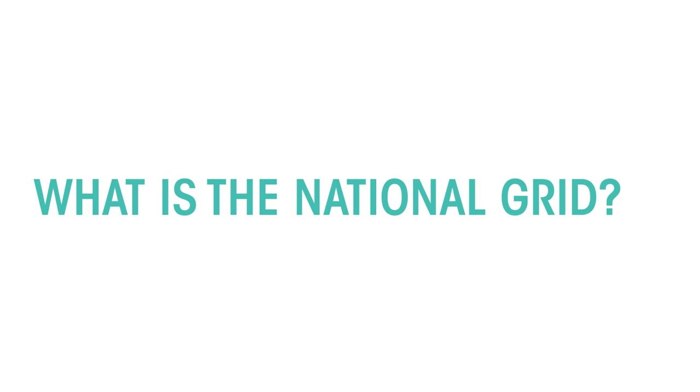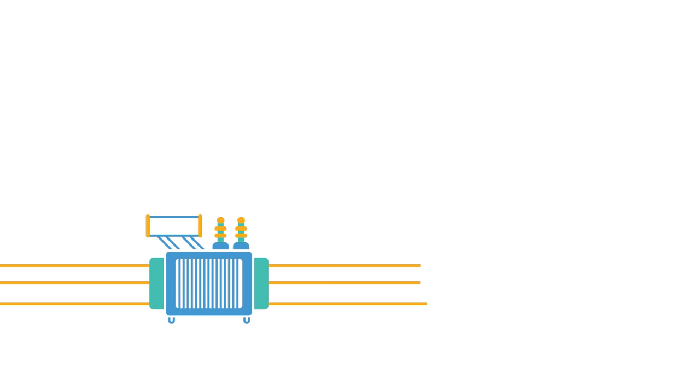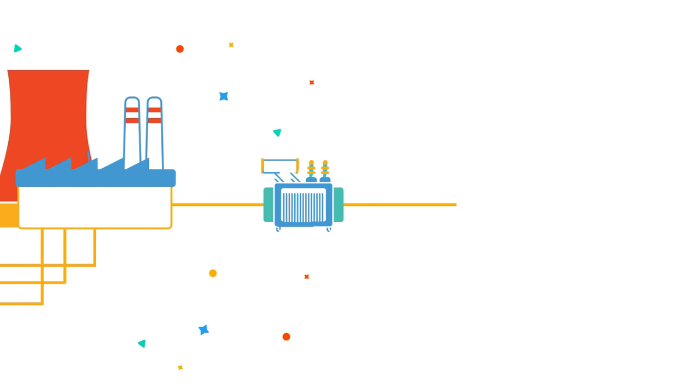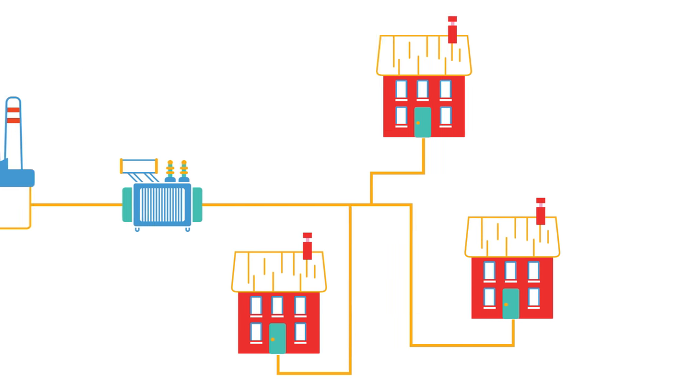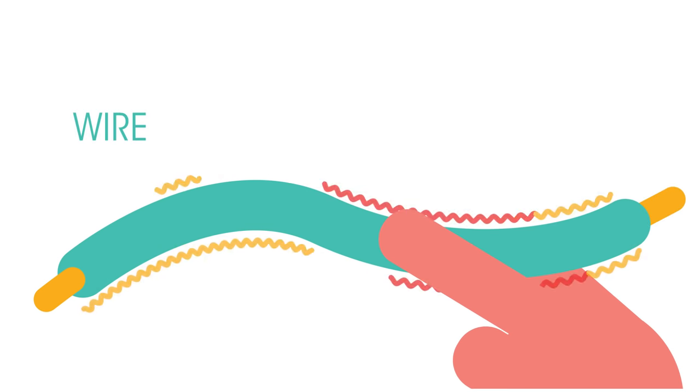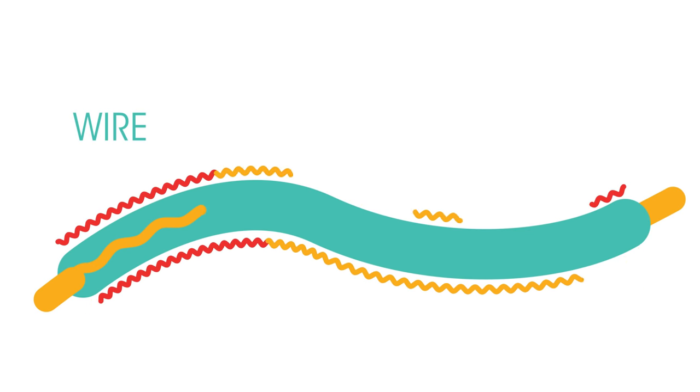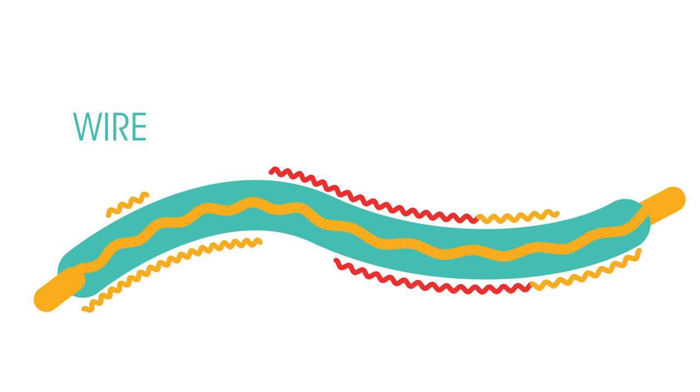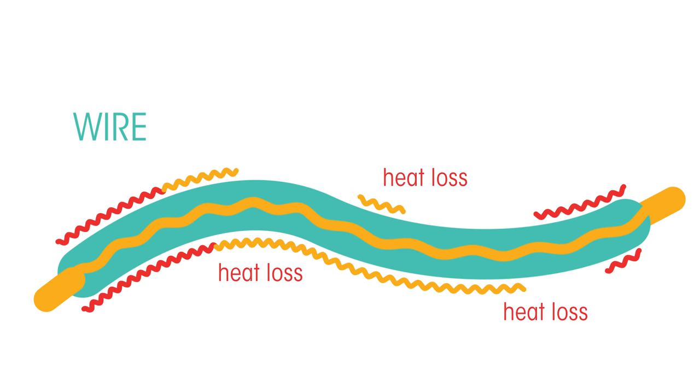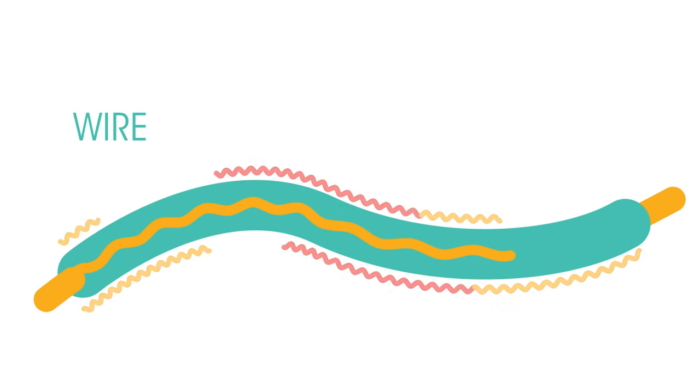So what exactly is the national grid? The national grid is a system of cables and transformers linking power stations to consumers. Have you ever felt an electrical wire and noticed it gets hot? This is because some energy traveling through the wire is lost as heat. In order to lose as little energy as possible, transformers are used.